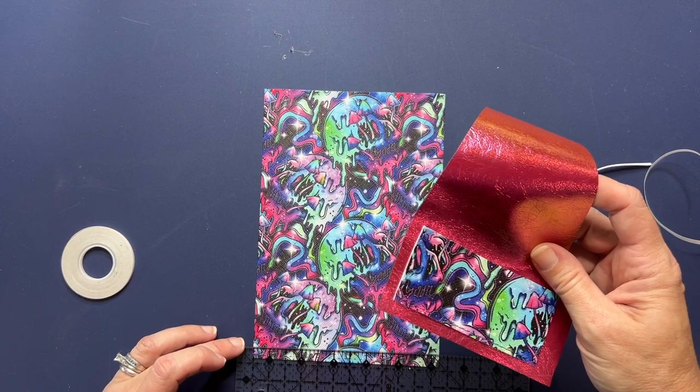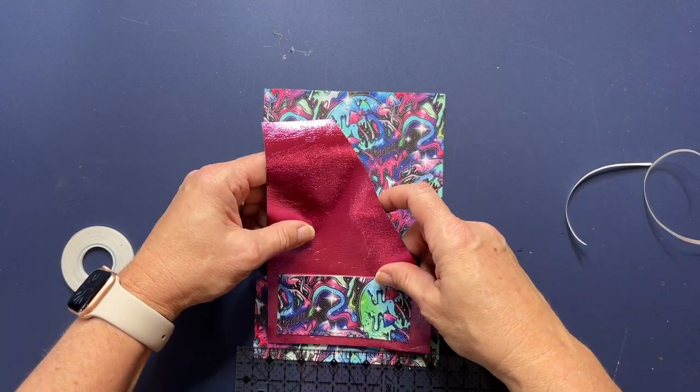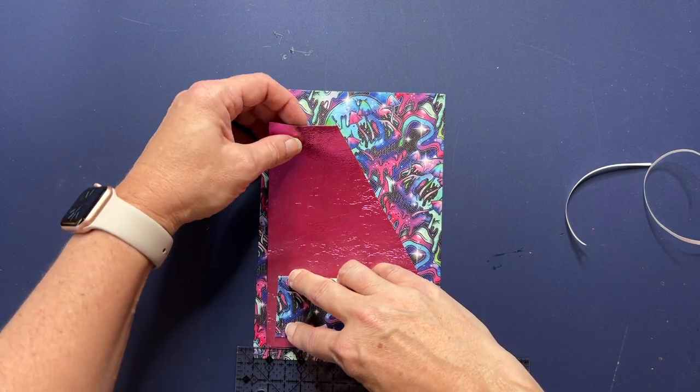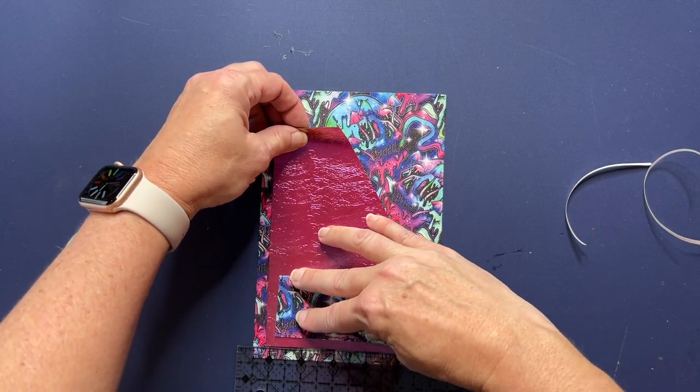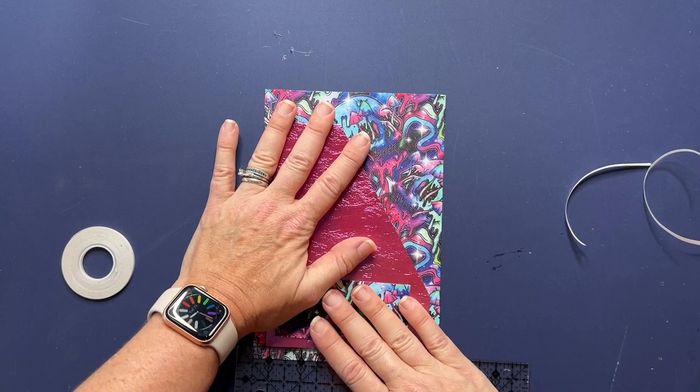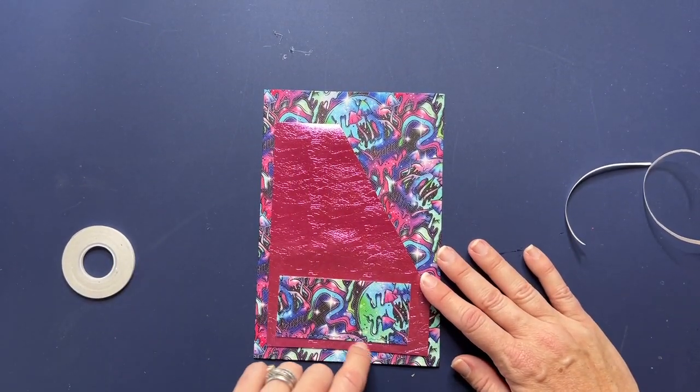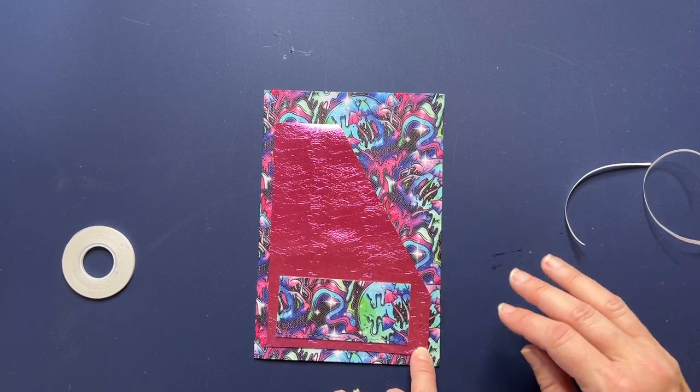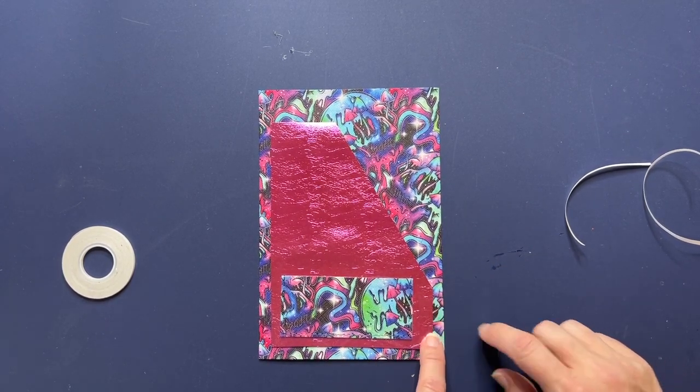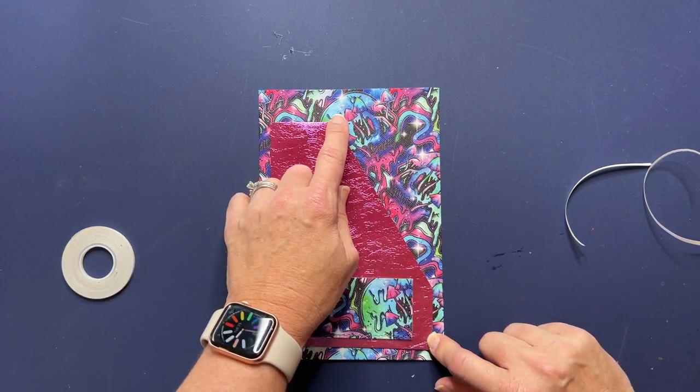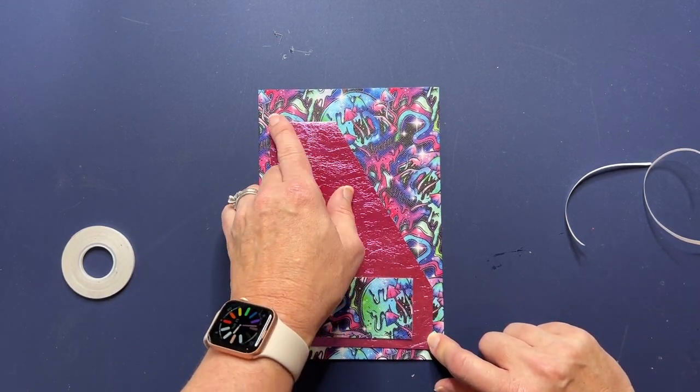Okay, so stitching across here, and then across here, and then up to this. So down, across, and this, so you're leaving this angled open, and you're leaving this top open.